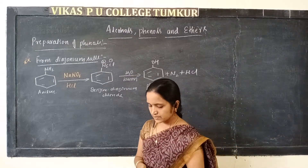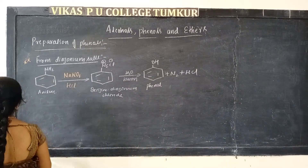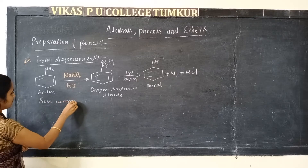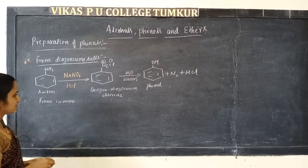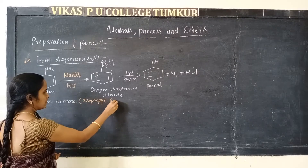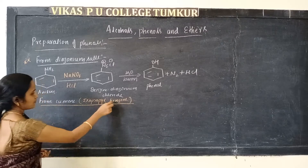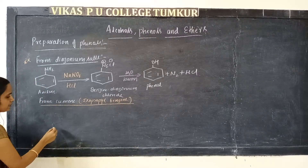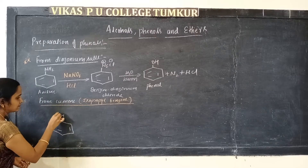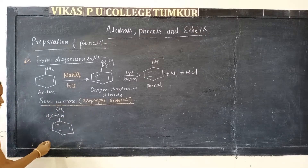Next, we are going to discuss the preparation of phenol using cumene. Cumene is nothing but isopropylbenzene — we call it cumene. The structure of cumene can be written as isopropylbenzene.